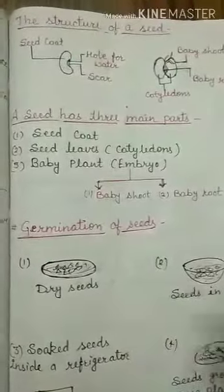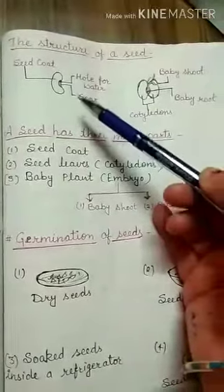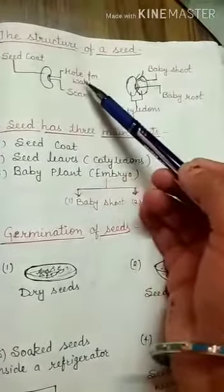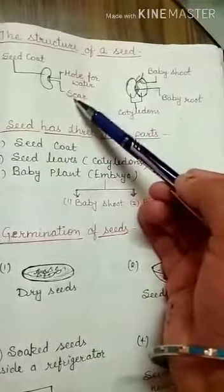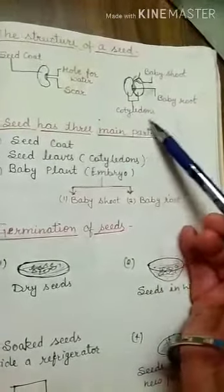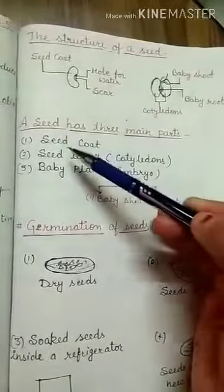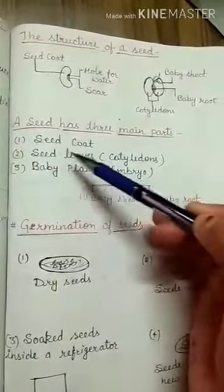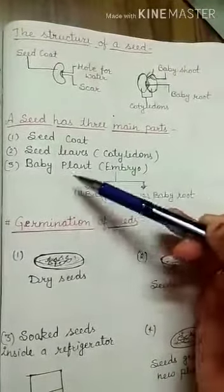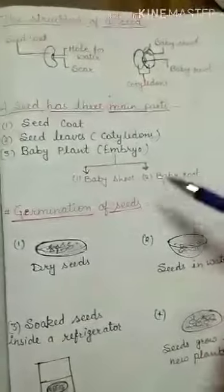Next is the structure of a seed. A seed has a seed coat and a hole for water. It has a scar, a baby shoot, a baby root, and cotyledons. A seed has three main parts: seed coat, seed leaves (cotyledons), and the baby plant (embryo) with a baby shoot and baby root.